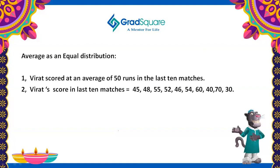Now let us learn about average as an equal distribution. The first statement says Virat scored at an average of 50 runs in the last 10 matches. The second statement gives his actual scores in the last 10 matches as 45, 48, 55, 52, 46, 54, 60, 40, 70, and 30 respectively. We will analyze both statements.